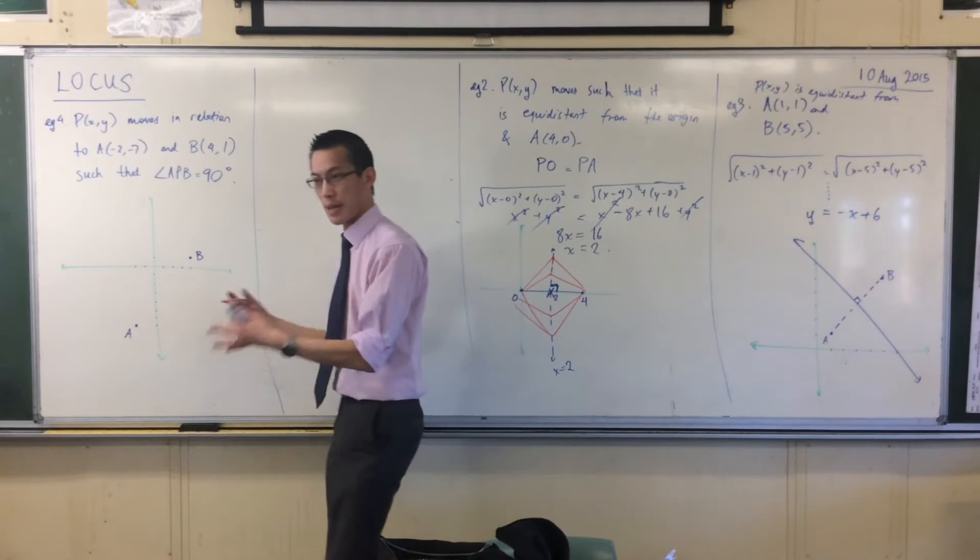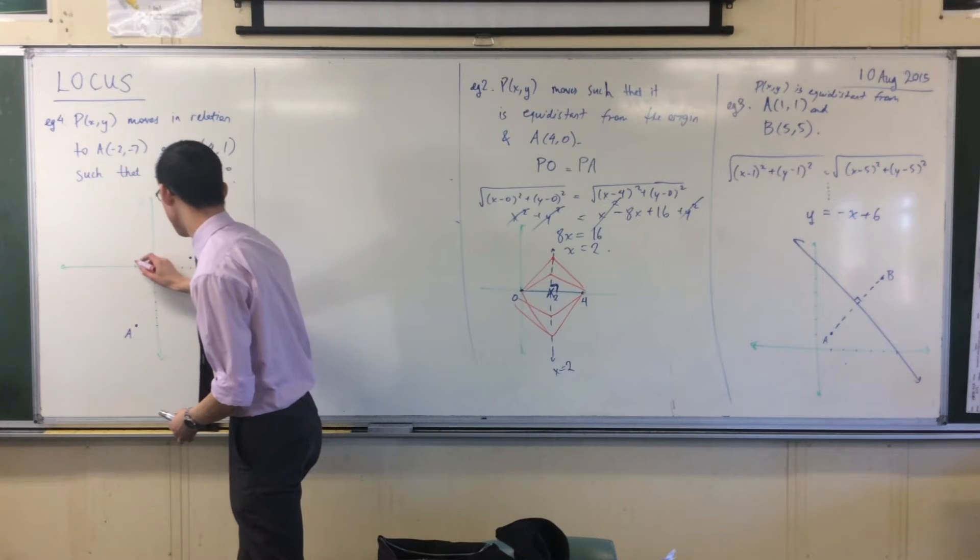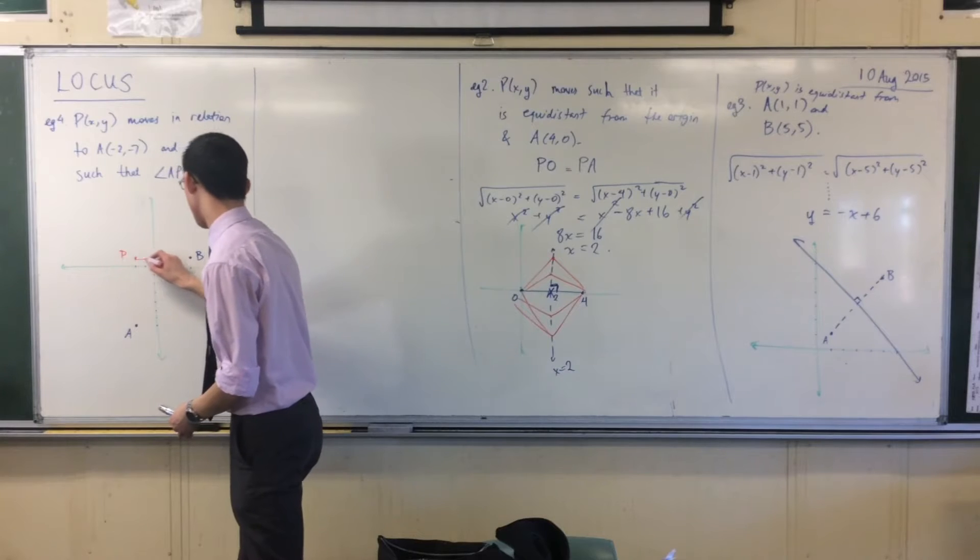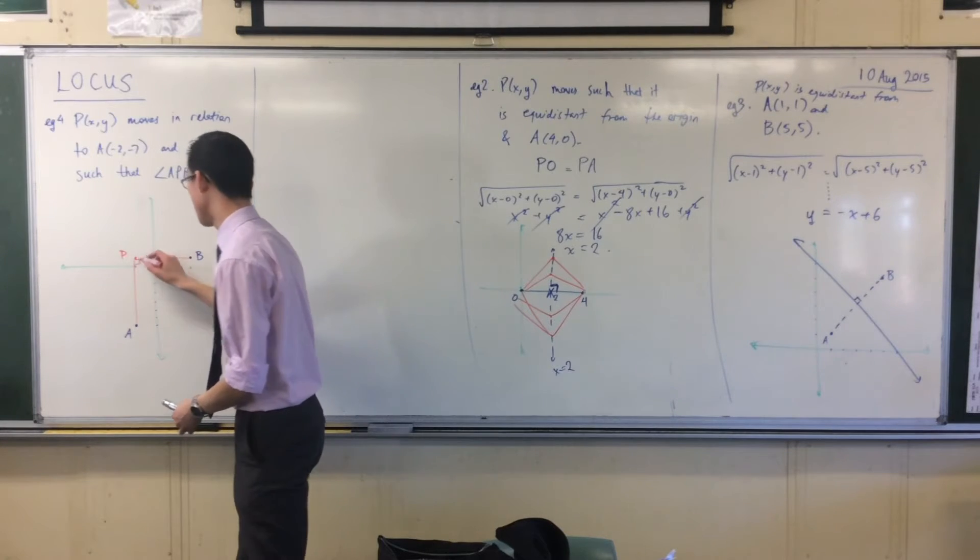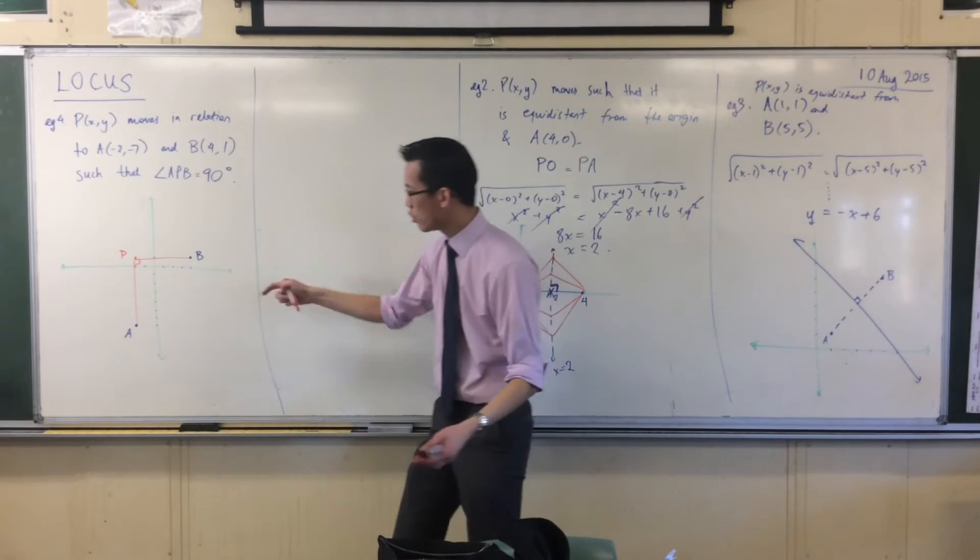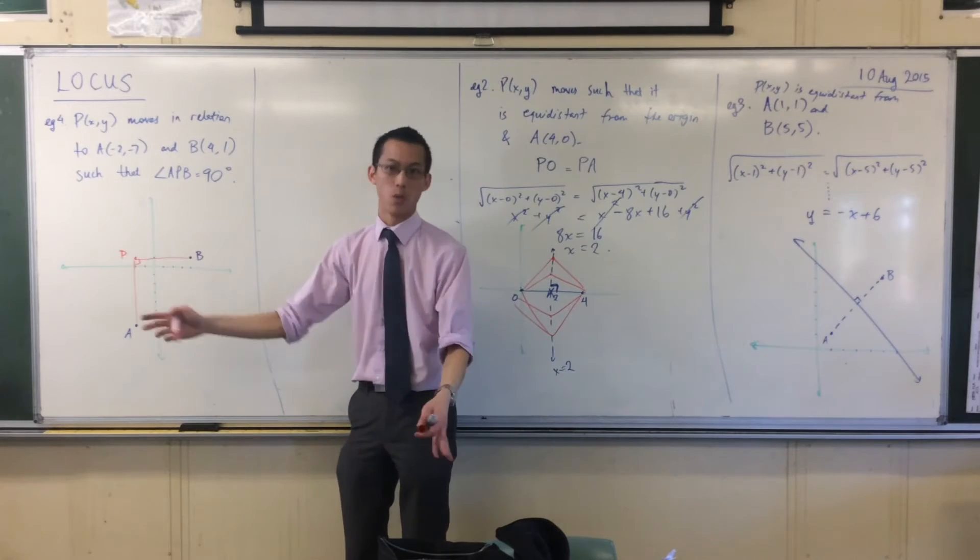So, for example, the easiest spot where I can put this is, that's where P can be, that's a right angle, and I could put one on the other side, that would work just fine.